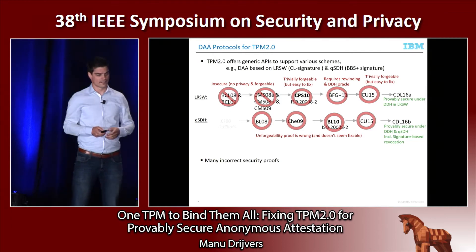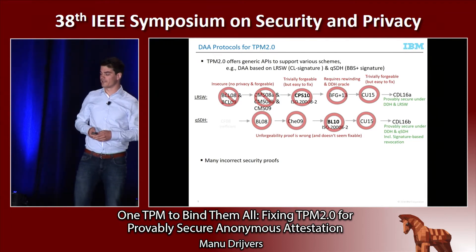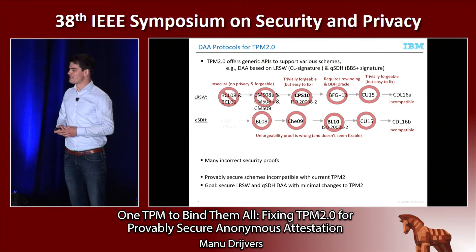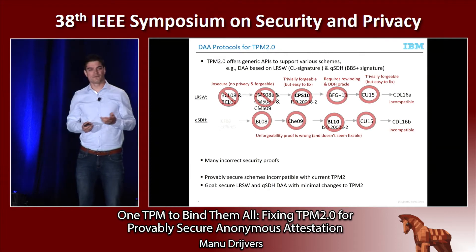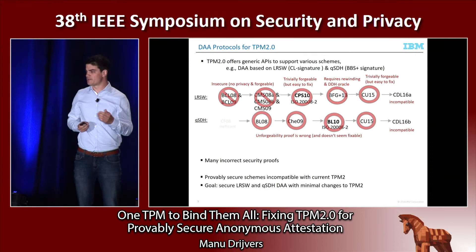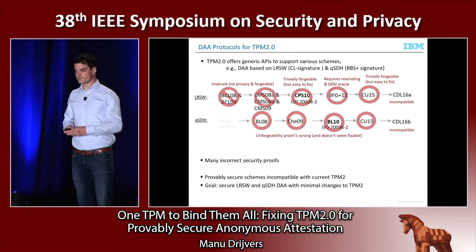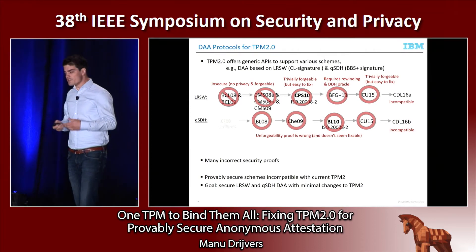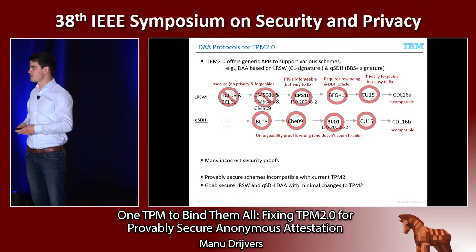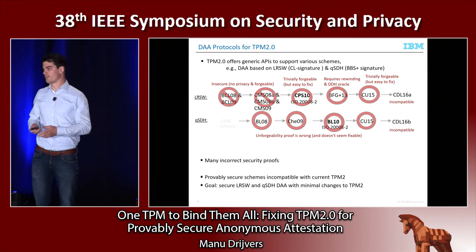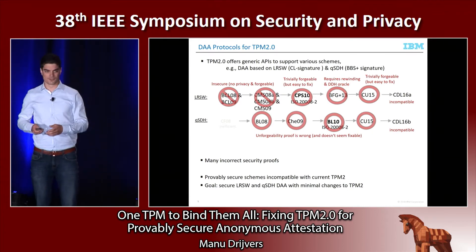There are two schemes that have security proofs that seem valid, but they are also problematic — they are sort of incompatible with the current TPM. The TPM is a very lightweight chip that only has a handful of commands and it's very hard to keep state between commands, so it would be very difficult to implement those two schemes on something like TPM 2.0. So we have a problem: we want to do anonymous attestation, but there's no provably secure scheme that can do that with the TPM 2.0. That's our goal.